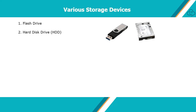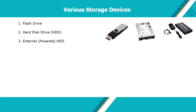A hard disk drive, or fixed disk drive, is an electromechanical data storage device that uses magnetic storage to store and retrieve digital information using rapidly rotating disks coated with magnetic material. The disks are connected via a Serial Advanced Technology Attachment cable. SATA is a standard for connecting and transferring data from hard disk drives to computer systems. An external drive is just a hard drive connected to a computer on the outside rather than on the inside.